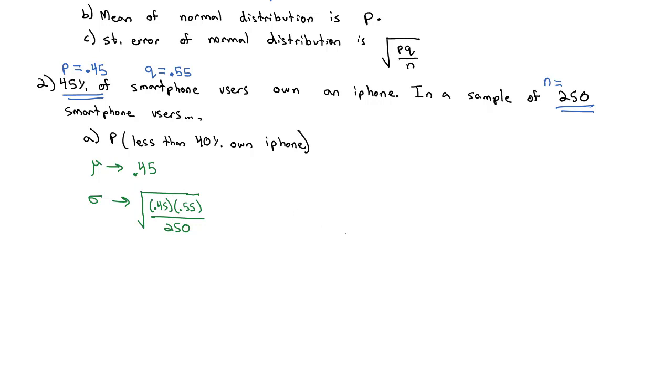So with that in mind, we can think about our normal distribution, which has a mean in the middle of 0.45. And we want less than 40%, so 40% is off to the left. We want the area to the left of 0.40.